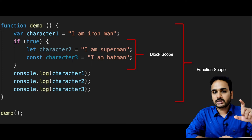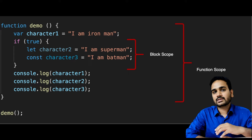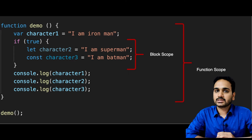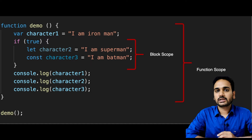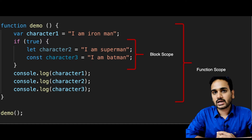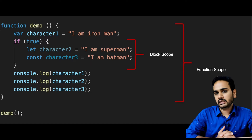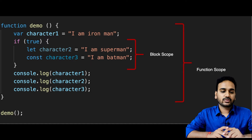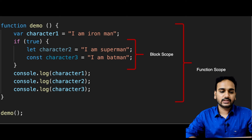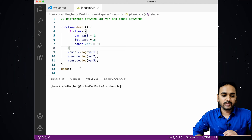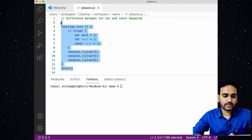Function-scoped variables are those which are defined and declared within a function — they can only be accessed within that function and cannot be accessed outside it. Block-scoped variables are those which are declared inside a block and cannot be accessed outside that block. A block could be any if-block, while-block, or any other loop block.